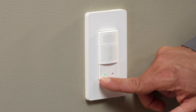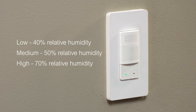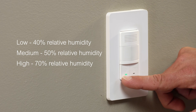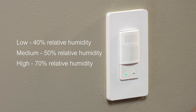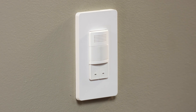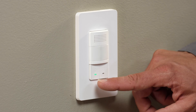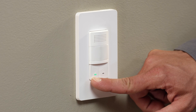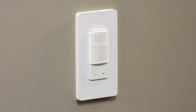One more press of the light button will set the humidity level at low, the factory default. Two more presses will set it at medium and three more presses will set it at high. The light indicator will blink 10 times confirming that you have changed the humidity set point. Press and hold the light button for 5 seconds to save the current setting and exit the configuration state.